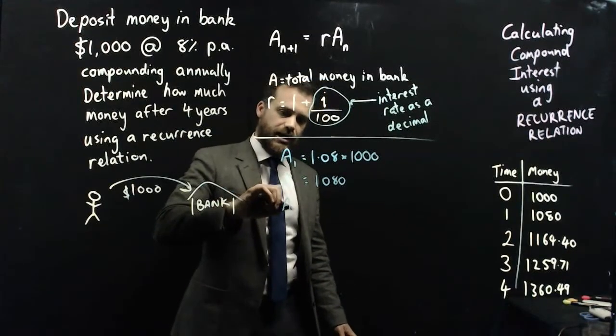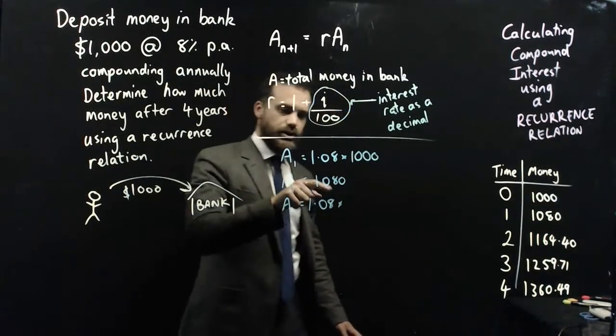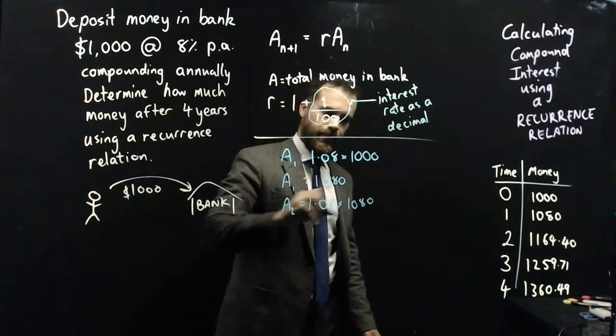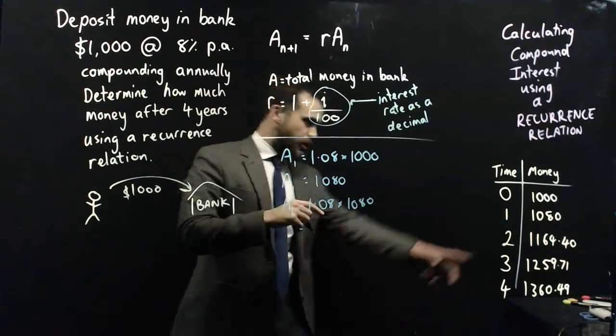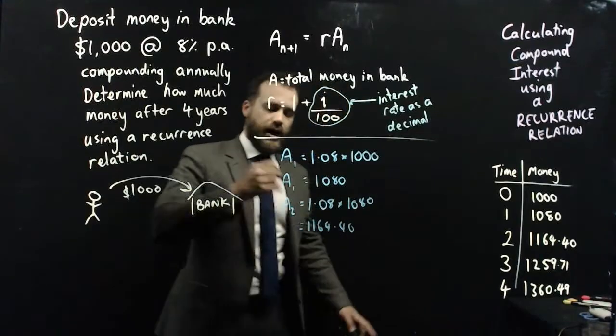You know what A1 is now, so we can now say that A2 is equal to 1.08 times A1, which is 1,080. And that, we know, is going to be $1,164.40.